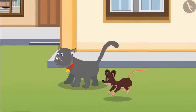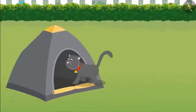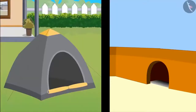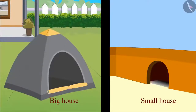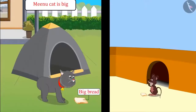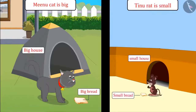After eating, Tinu and Minu play a lot and then leave for their homes. Children, here is Minu's house and here is Tinu's house — can you tell which one has a bigger house? Minu's house is bigger than Tinu's house and Tinu's house is smaller than Minu's house. So kids, Minu the cat is big, so she ate big bread and her house is also big. Tinu is small, so he took small bread and his house is also small.